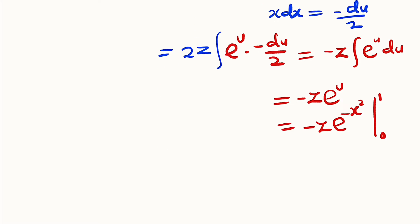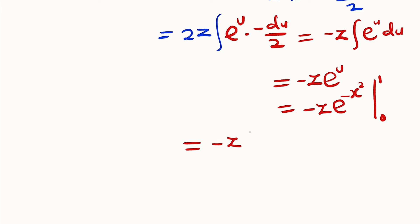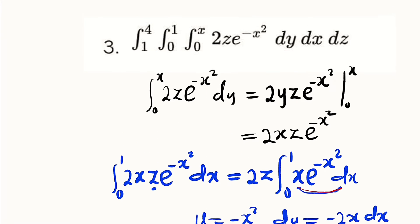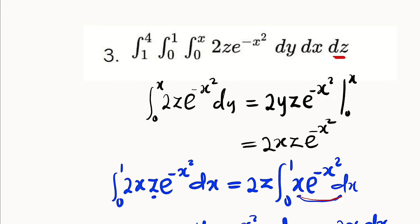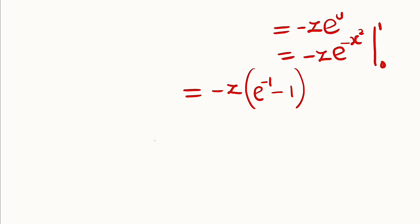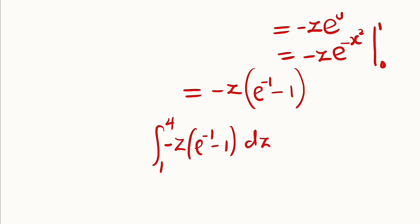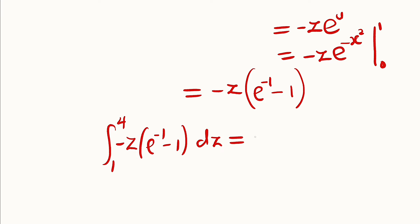Substituting the bounds: at x=1, e^(-1²) = e^(-1); at x=0, e^0 = 1. So we get -z·(e^(-1) - 1). This is our new function, and we integrate it finally with respect to z from 1 to 4. We have the integral from 1 to 4 of -z·(e^(-1) - 1) dz. Since (e^(-1) - 1) is constant, we bring it out: -(e^(-1) - 1) times the integral from 1 to 4 of z dz.